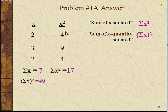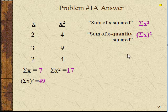Over here I have the squared values of x. 2 squared is 4, 3 squared is 9, 2 squared is 4, and if I add up the x squared values, I get Σx² equals 17. So Σx² is the correct symbol for that, and (Σx)² is the correct symbol for that.